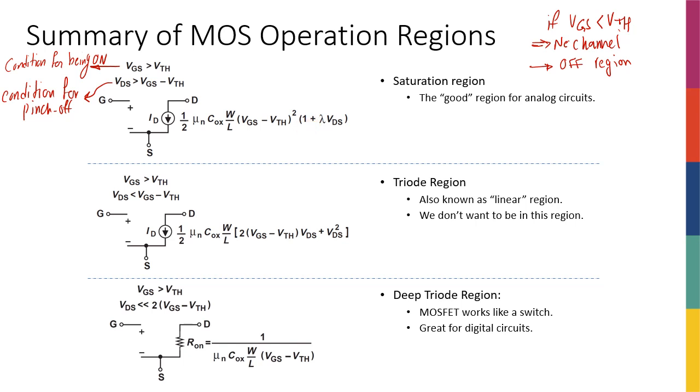If I have channel length modulation (CLM), I'm going to have that part as well. The saturation region, as we mentioned, is really the good region for analog circuits. This is where we want to be, similar to the active region of BJTs. In MOSFETs we want to be in the saturation region.